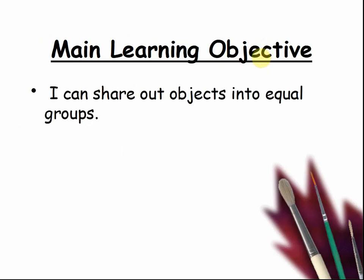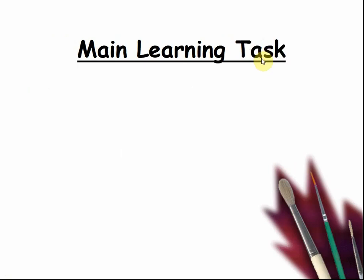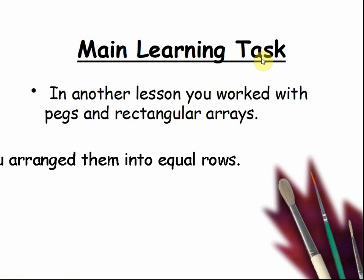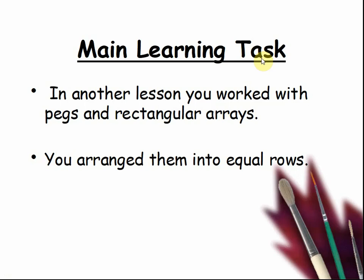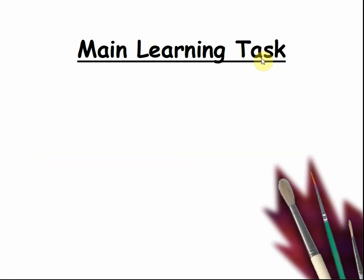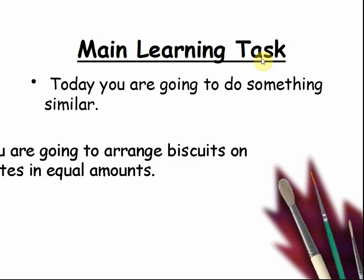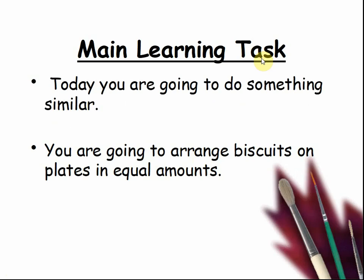I can share out objects into equal groups is our main learning objective of the day. Main learning task: in another lesson, you worked with pegs and rectangular arrays, arranging them into equal groups. Today, you are going to do something similar — you are going to arrange biscuits on plates in equal amounts.